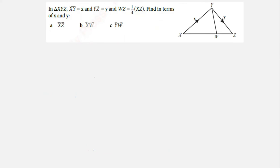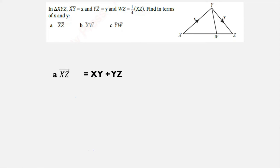In triangle XYZ, vector XY = x and vector YZ = y. WZ = (1/4) of XZ. Find vector XZ = XY + YZ. Vector XY = x and YZ = y. So XZ = x + y.